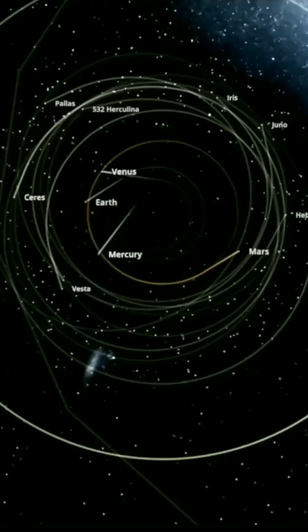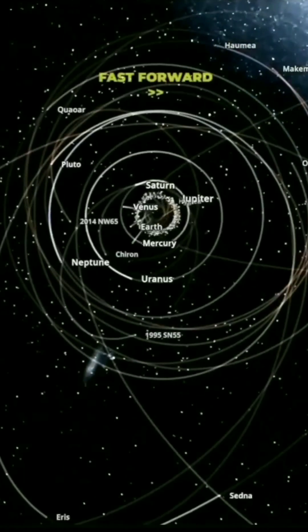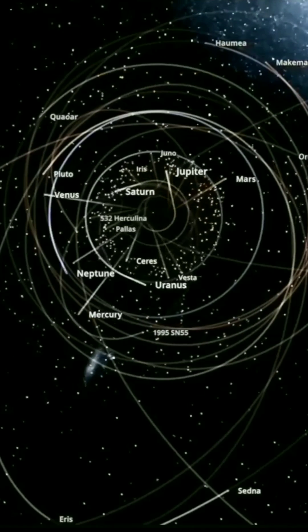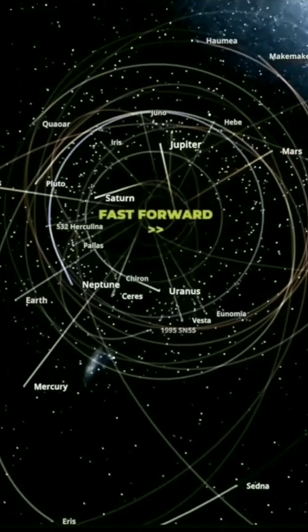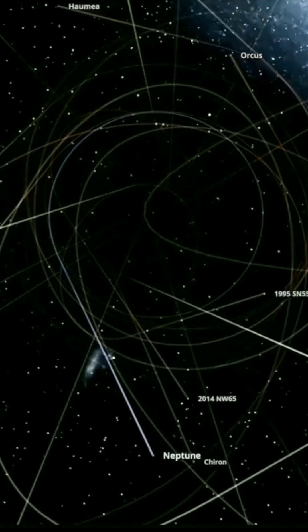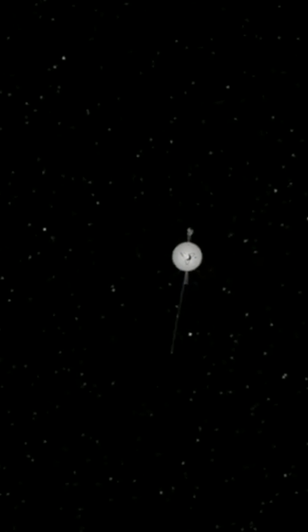If the sun instantaneously vanished, Voyager would be towed along mainly by the gravity of the Milky Way galaxy. Until it is captured by a nearby star, it would not float off into the empty void between galaxies escaping the Milky Way.